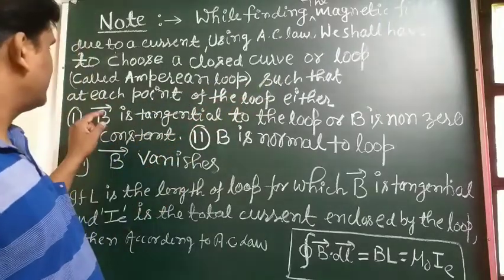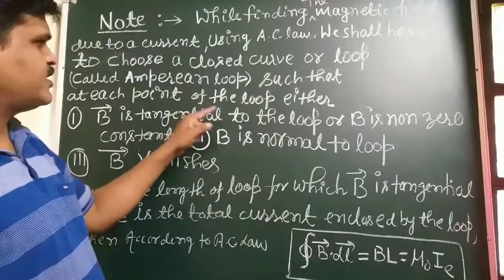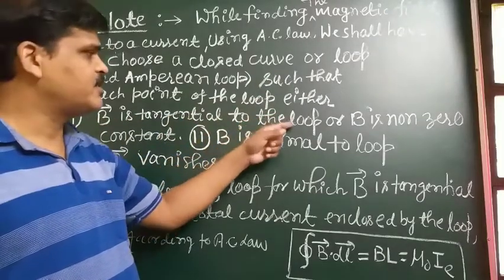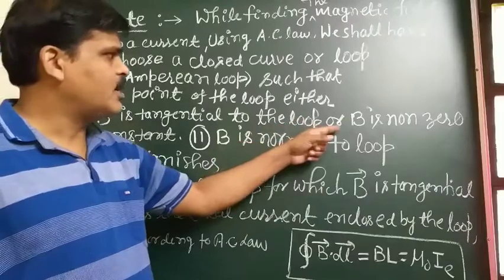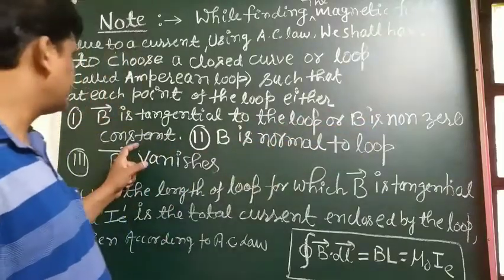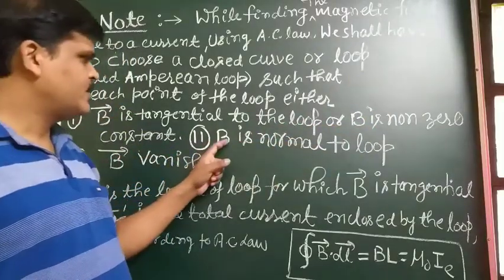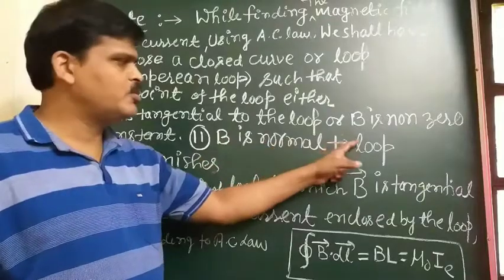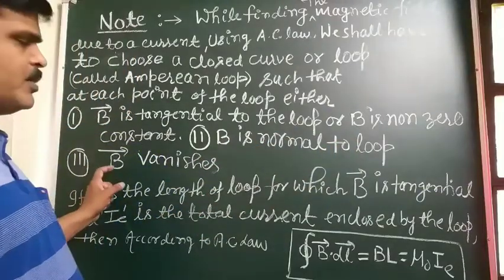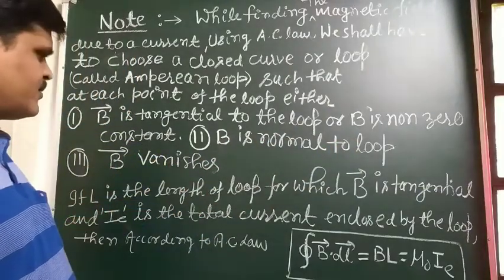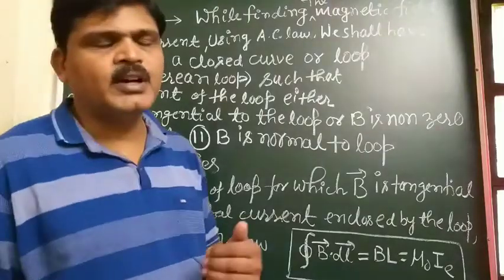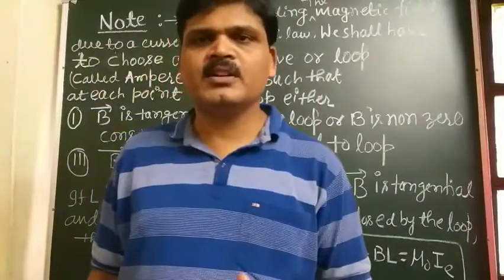either vector B is tangential to the loop, means magnetic field tangential to loop, or B is non-zero constant. Second, B is normal to the loop, or vector B vanishes, and this is the important point related to Ampere's circuit law.